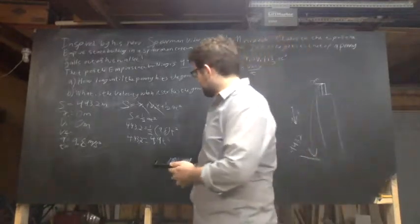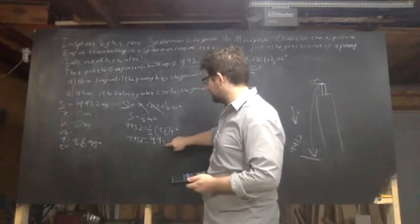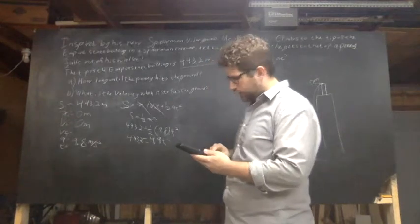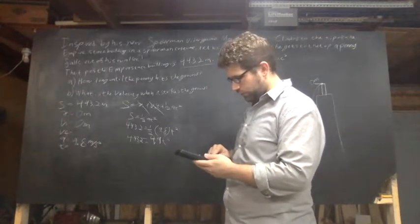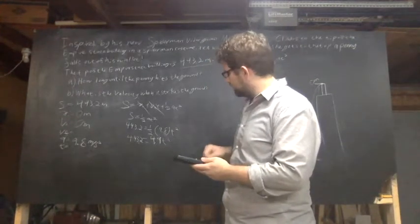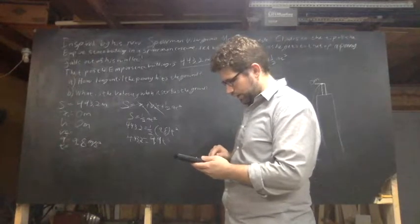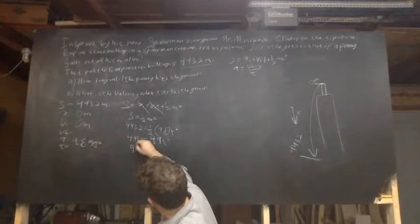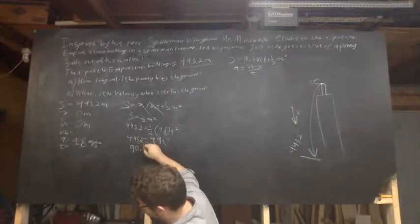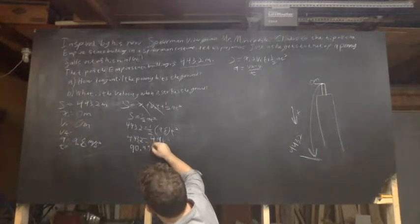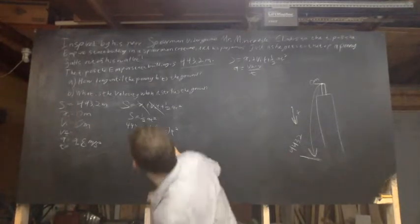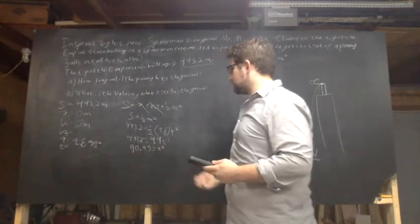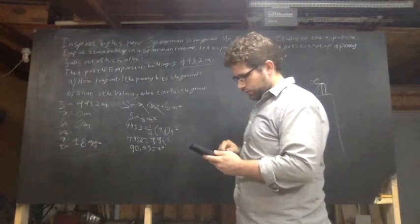So first, we're going to divide both sides by 4.9 to get the T squared on its own. So we're going to do 443.2 divided by 4.9, and we come out with a nice 90.45 equals T squared.